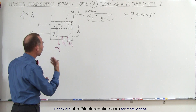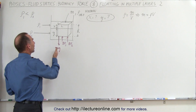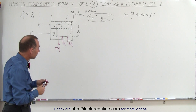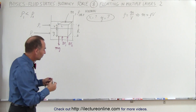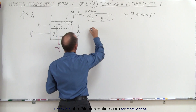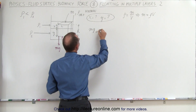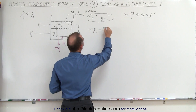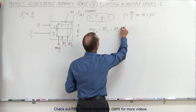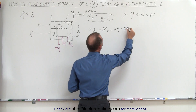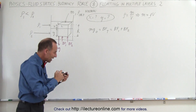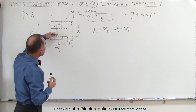We do know that the total buoyancy force must equal the weight of the object, or the object will simply sink to the bottom. So we can say here that the weight of the object mg is equal to the total buoyancy force, which is simply equal to the sum of the two buoyancy forces BF1 and BF2, caused by the weight of the displaced liquid in each layer.